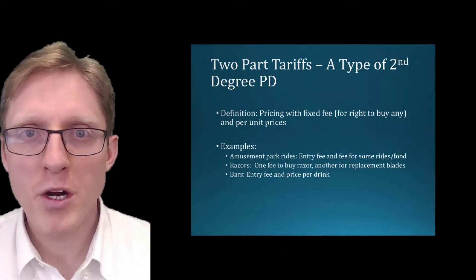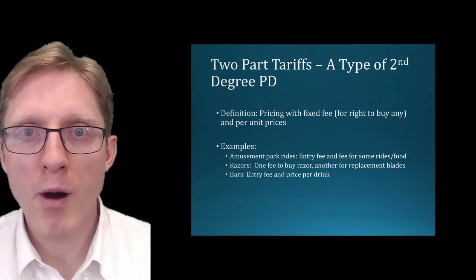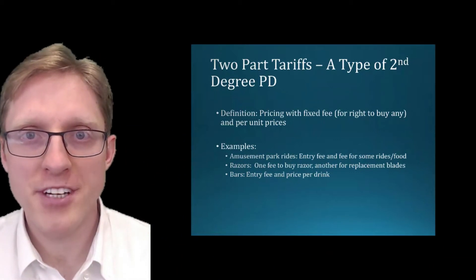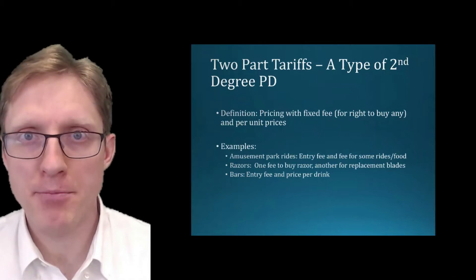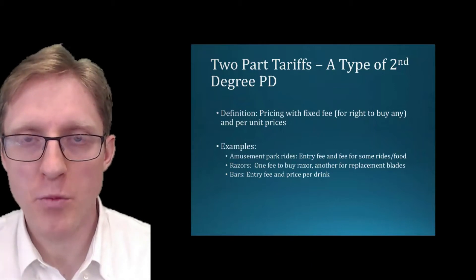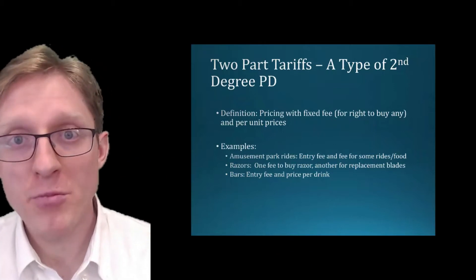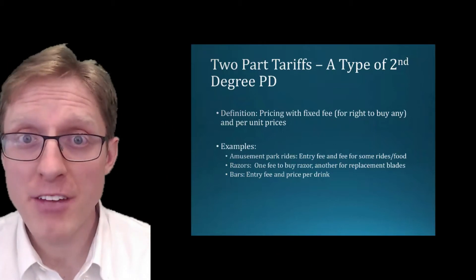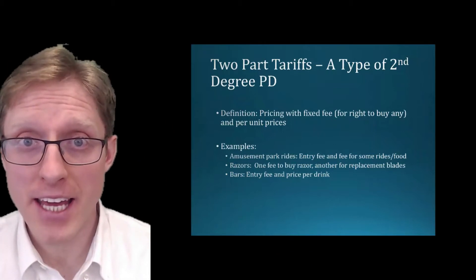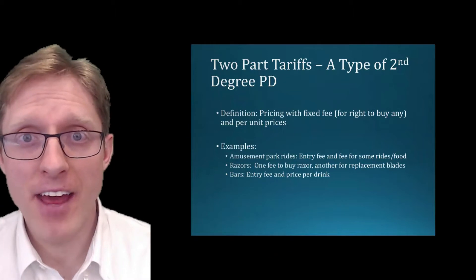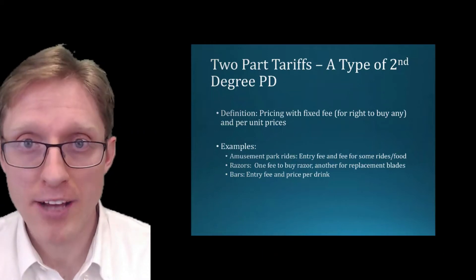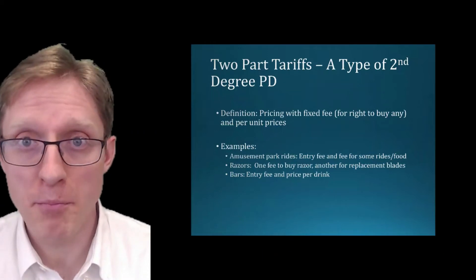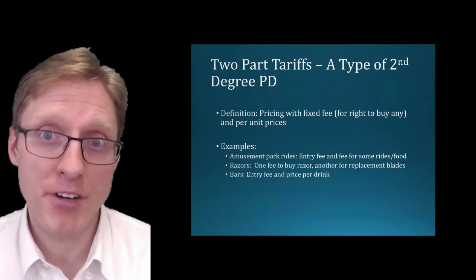In this short video we're going to go over two-part tariffs, which is a type of second-degree or indirect price discrimination where the firm sets a fixed fee for the right to buy, and then charges a flat price per unit bought thereafter.